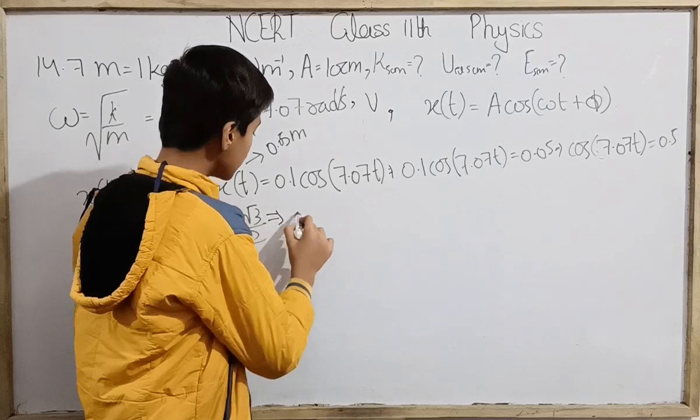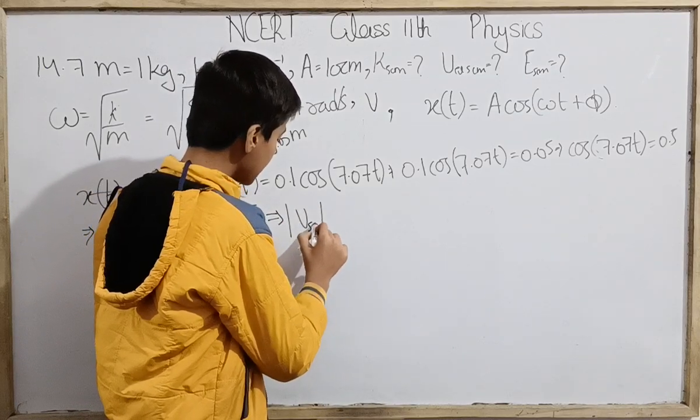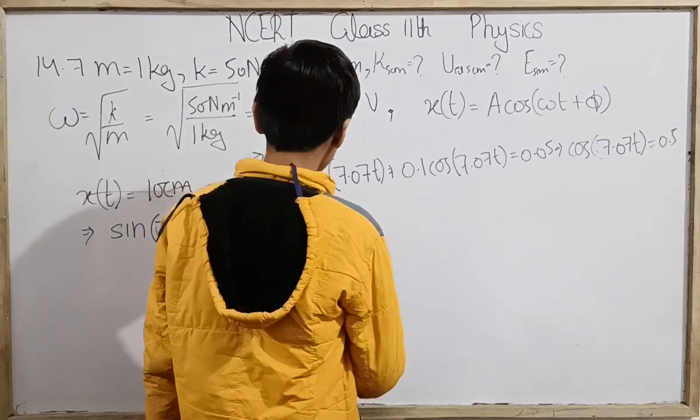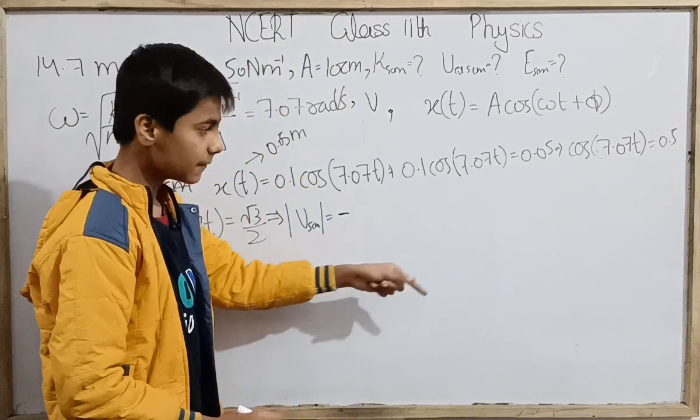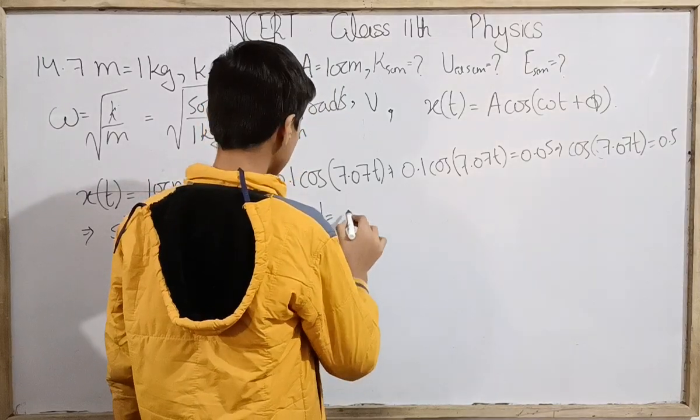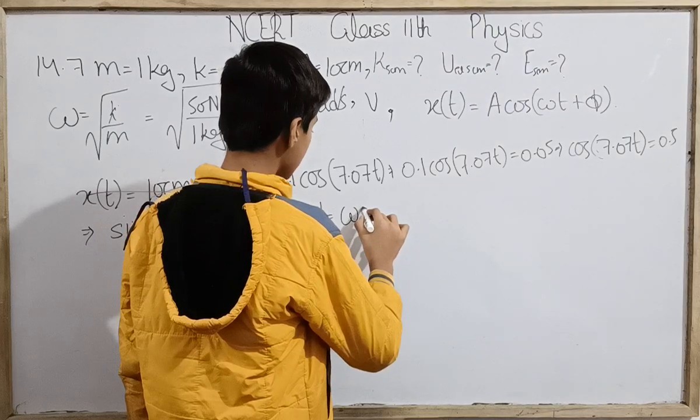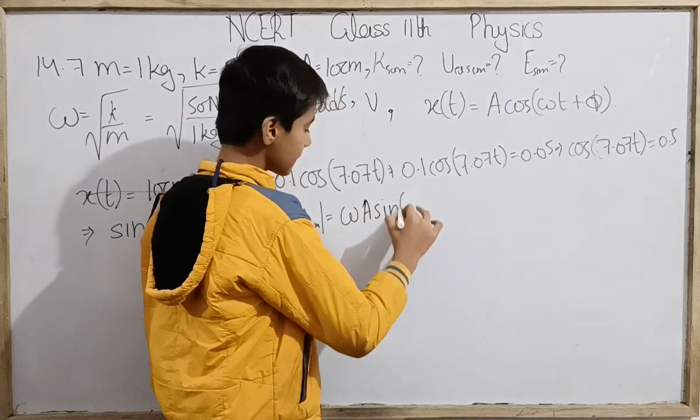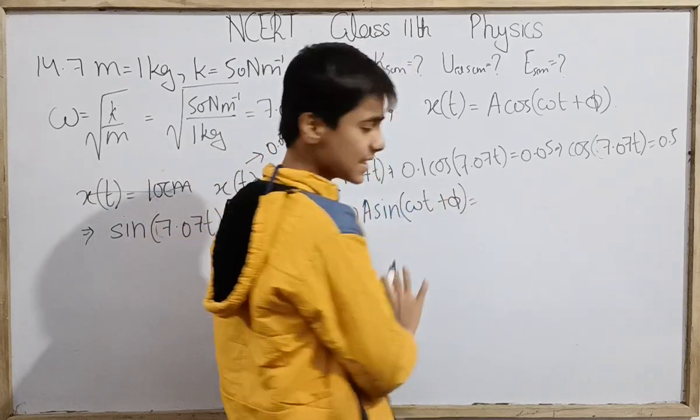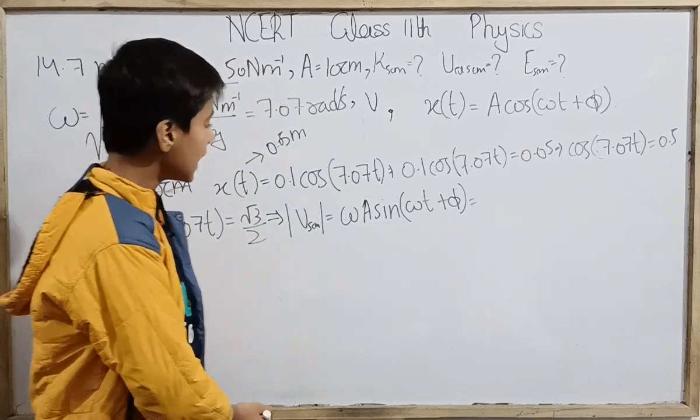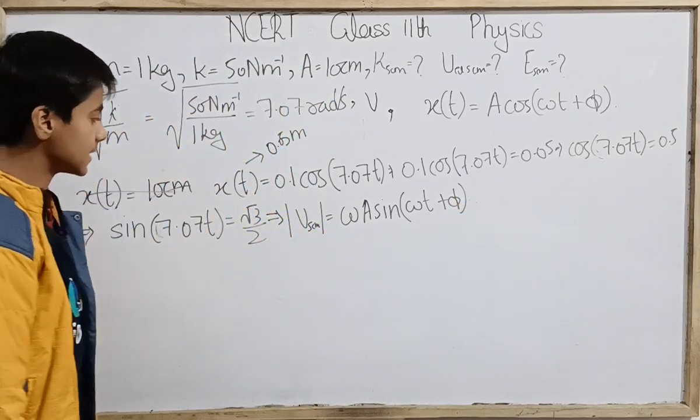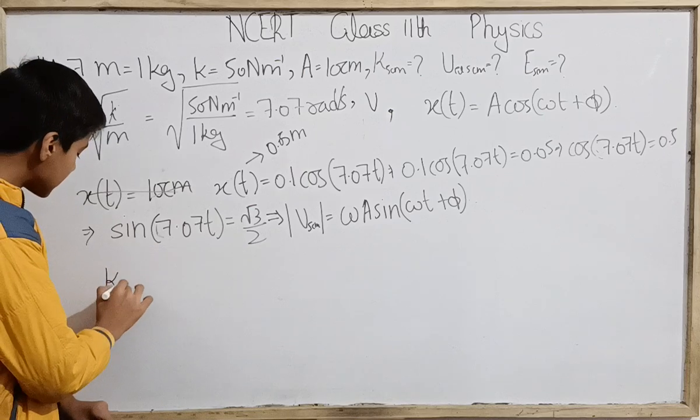We just got it. Now we will find velocity magnitude at 5 centimeter. That will be v equals negative Aω sin(ωt + φ). Since phi is 0, we are now just putting all the values. If we put all the values correctly, then from here we are just getting our velocity.